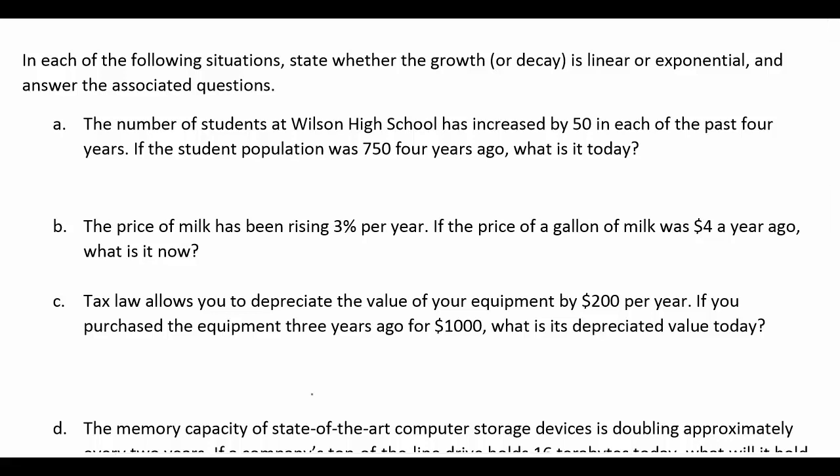A: The number of students at Wilson High School has increased by 50 in each of the past four years. If the student population was 750 four years ago, what is it today? Okay, so they're adding 50 every year, so in four years they add 200. So this is definitely a linear growth, and then today they're going to have the 750 plus the 200, so they'll have 950.